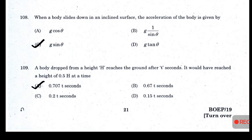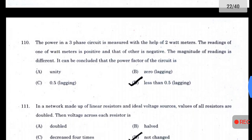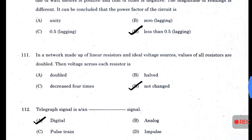When a body slides down an inclined surface, the acceleration of the body is given by g·sin(θ). A body dropped from a height h reaches the ground after t seconds; it would have reached a height of 0.5h at approximately 0.70t seconds. The power in a three-phase circuit is measured with the help of two watt meters. The reading of one watt meter is positive and the other is negative, with different magnitudes; it can be concluded that the power factor of the circuit is less than 0.5 lagging.